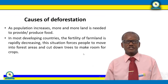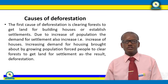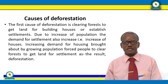Now let's look at the causes of deforestation. As population increases, more land is needed to produce food. In most developing countries including Tanzania, the fertility of farmland is rapidly decreasing, forcing people to move into forest areas and cut down trees to make room for crops. The first cause is clearing forests to get land for building houses or establishing settlements. Increasing demand for housing brought about by growing population forces people to clear forests.